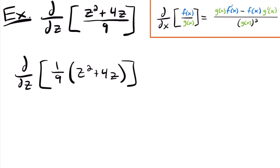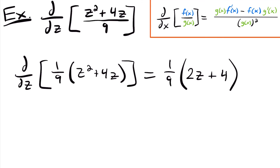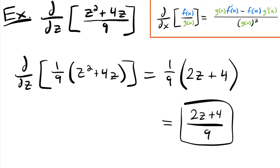Rewriting, we have the derivative with respect to z of 1/9 times z squared plus 4z. We don't need the quotient rule because there are no z's in the denominator. We just multiply 1/9 by the derivative of z squared plus 4z. The derivative of z squared is 2z and the derivative of 4z is 4, so our answer is 2z plus 4 divided by 9.